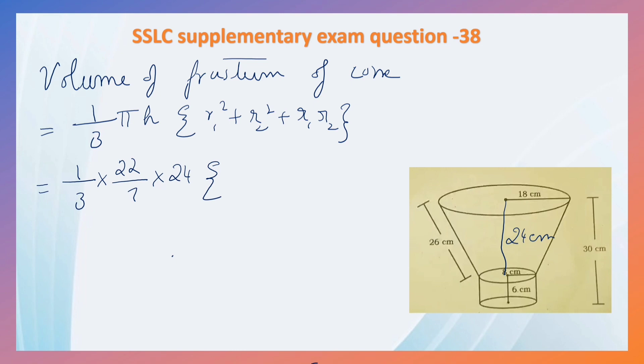R1 is 18 cm, R2 is 8 cm. That is equal to 22 into 8 by 7 into 18 square is 324, plus 8 square is 64, 18 into 8 is 144.